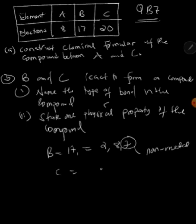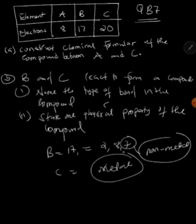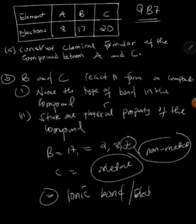Then C, we already found that it was a metal because it was found in group 2. Now this is a non-metal. This is a metal. Name the type of bond in the compound. What do you think is the bonding between metal and non-metal? So the answer is ionic bond. The question says bond, not bonding. Or you can say electrovalent bond.